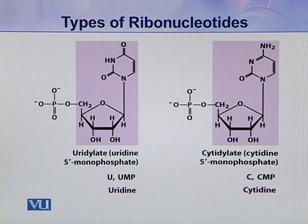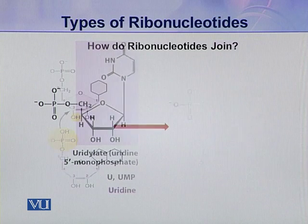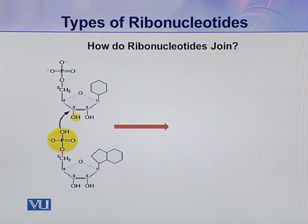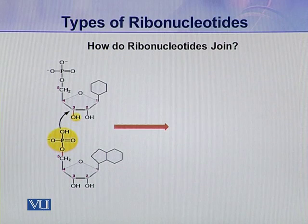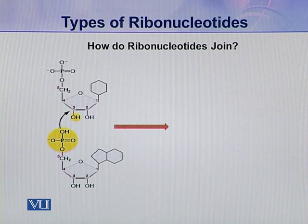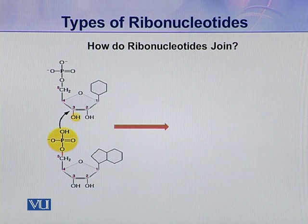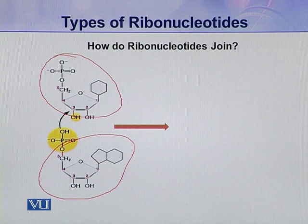So these four types of ribonucleotides are present in ribonucleic acids. Next, how are these ribonucleotides joined together? Ribonucleic acid is a polymeric compound, so many ribonucleotides join together to make a molecule. Here you can see this is one ribonucleotide and this is the second ribonucleotide.